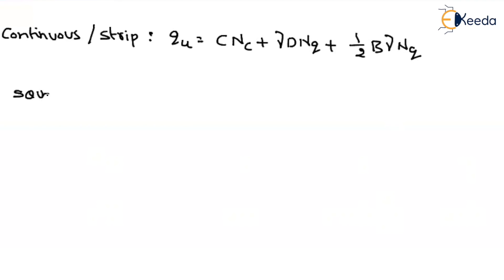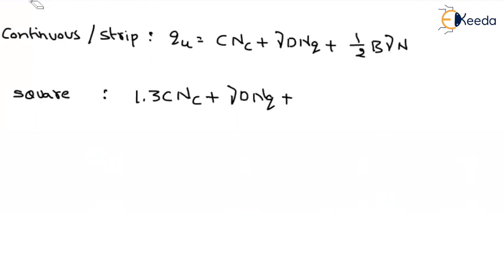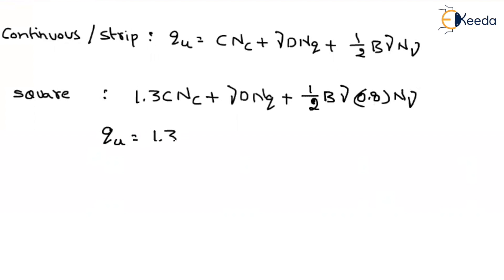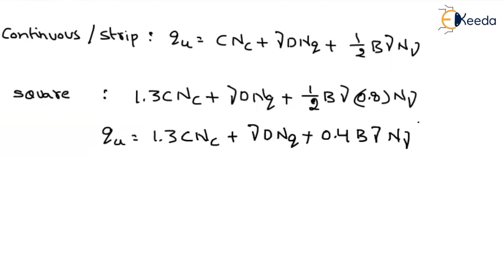For a square footing, the factor for Nc is 1.3, so the first term becomes 1.3·C·Nc. The factor for Nq is 1, so the depth term γ·D·Nq remains the same. The factor for Nγ is 0.8, giving 0.8 times one-half times B times γ times Nγ. Simplifying, qu equals 1.3·C·Nc plus γ·D·Nq plus 0.4·B·γ·Nγ.